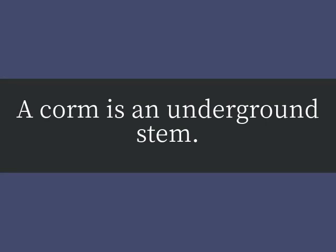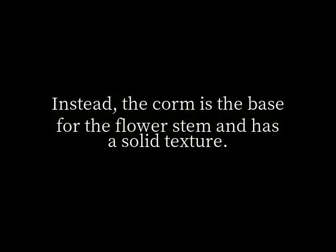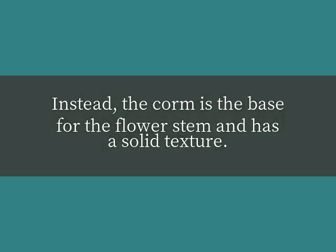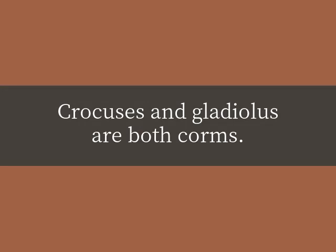A corm is an underground stem. It has the same type of protective covering and basal plate as the bulb, but it does not grow in layers. Instead, the corm is the base for the flower stem and has a solid texture. Crocuses and gladiolus are both corms.